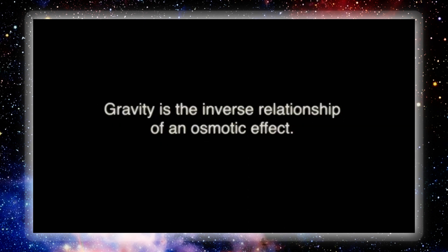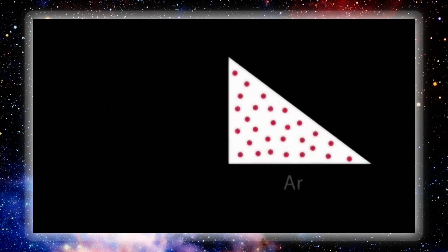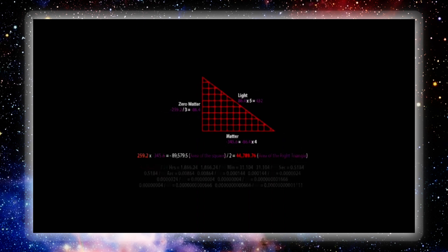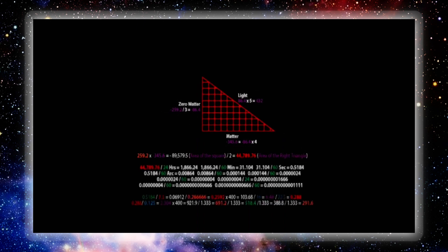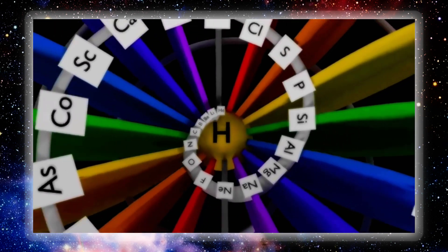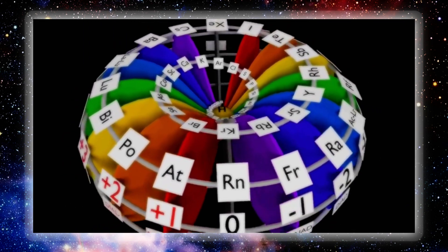Gravity is the inverse relationship of an osmotic effect created by a lower charge density element defined by alternating current being attracted towards the higher charge density of a singularity zero point representing direct current. The ATV illustrates the elemental charge density by representing the area that the fixed charge occupies. The elemental resonance is equivalent to and defined by the melting point of the element. When the resonance is divided by time — represented by 24 hours, 60 minutes, 60 seconds — and normalised with the speed of light using a factor of 7.5, this produces the rectified base resonant frequency, which is the metric with which to manipulate matter, as demonstrated by the figures of Chladni.